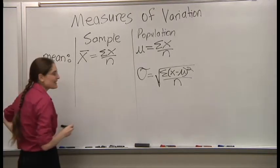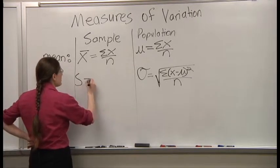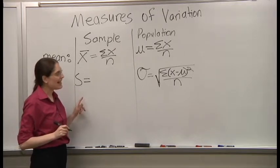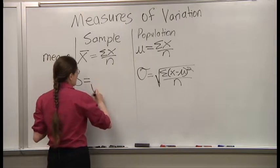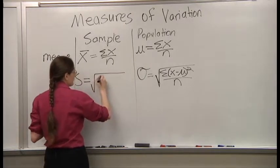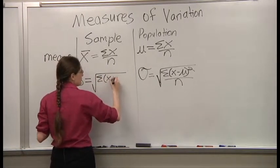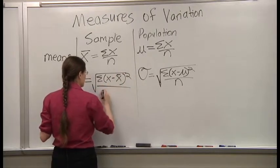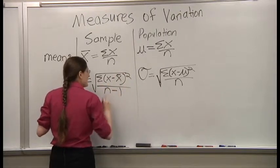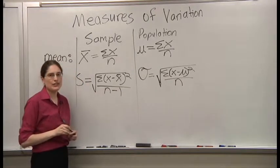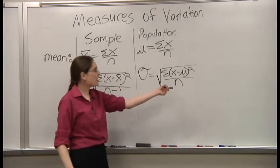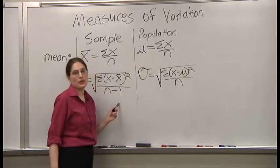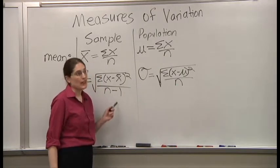For a sample, however, we call the sample standard deviation S. And the formula is a tiny bit different. The important difference is instead of dividing by N, we divide by N minus 1. That's the difference.